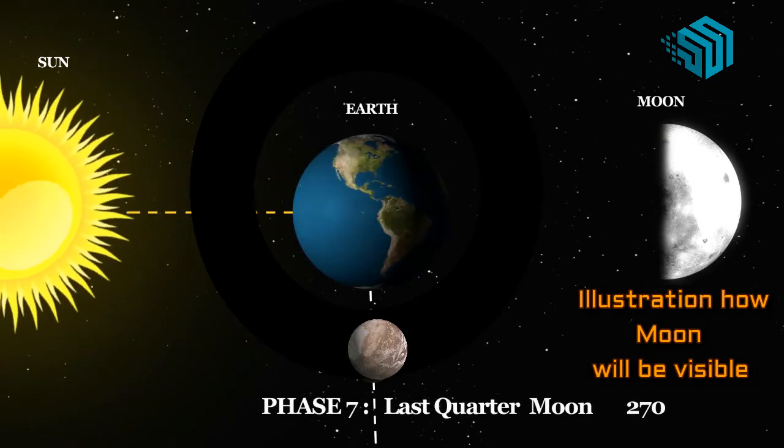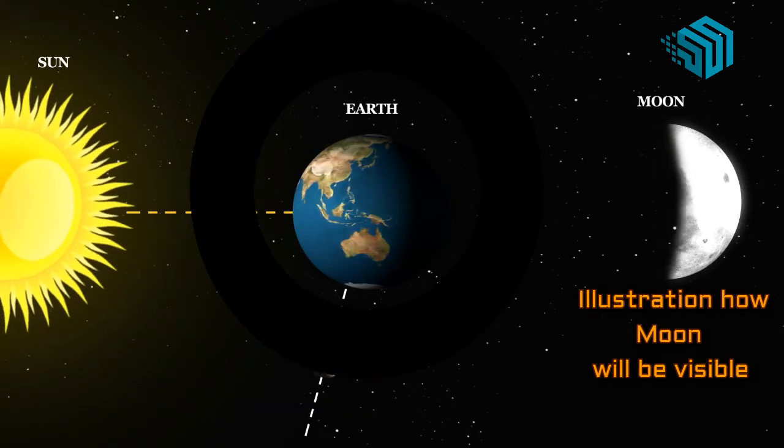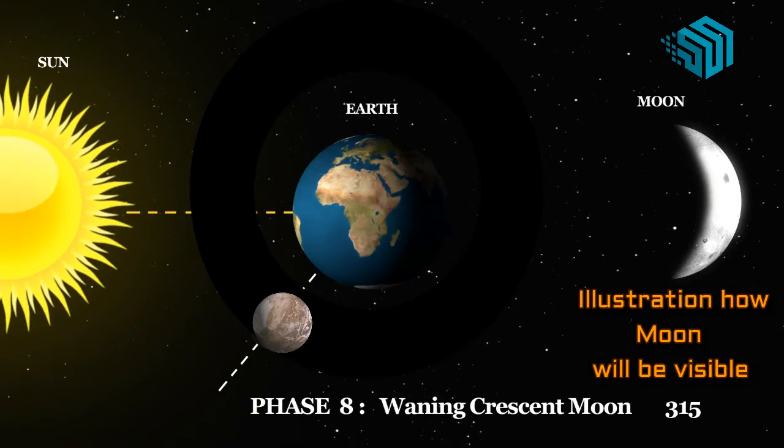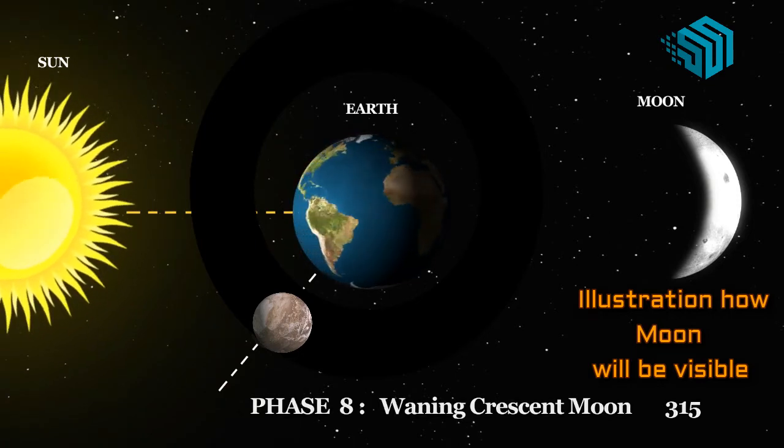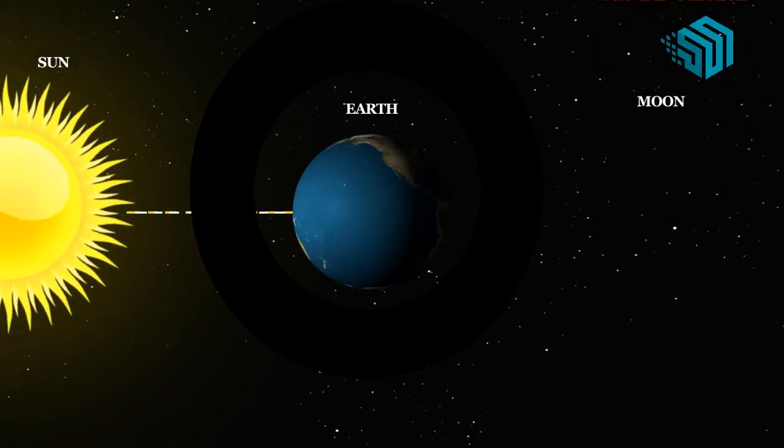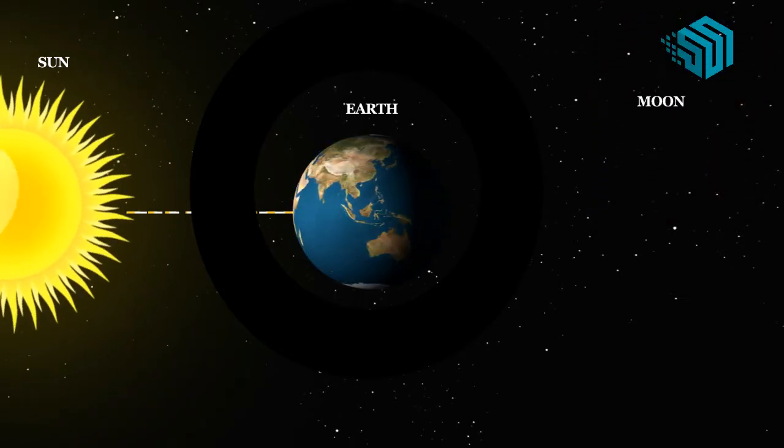Phase seven, last quarter. Half of the moon lit up by the sun. The part that we can see lit up is slowly getting smaller. Phase eight, waning crescent. A small part of the moon is lit up at this point. It is getting smaller gradually.